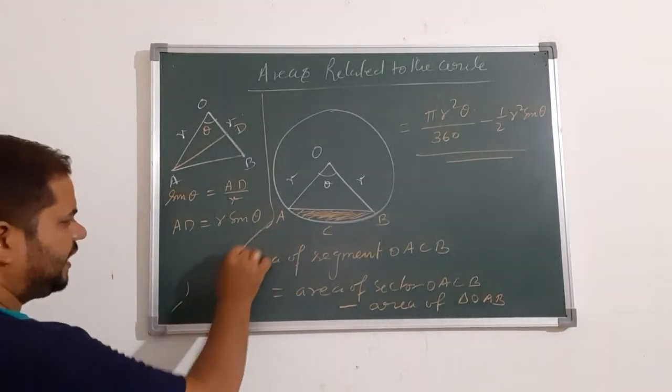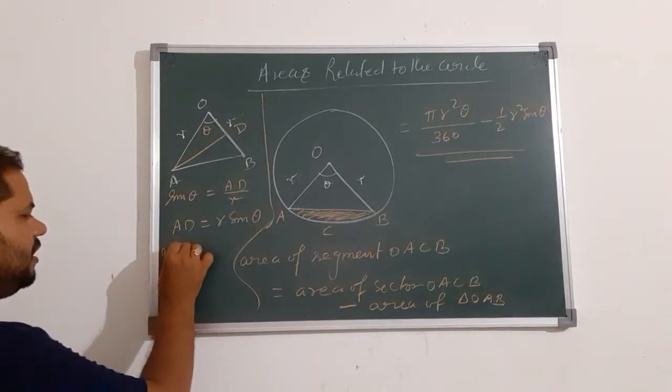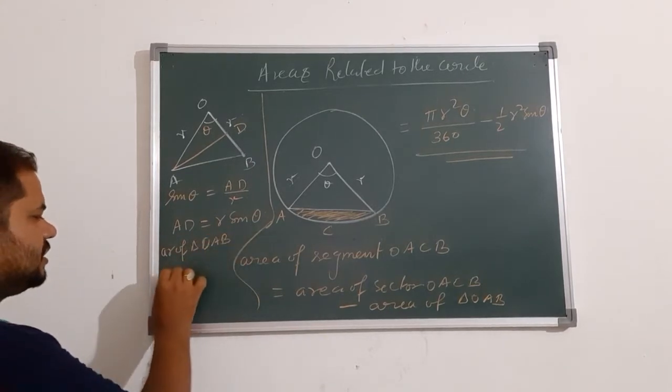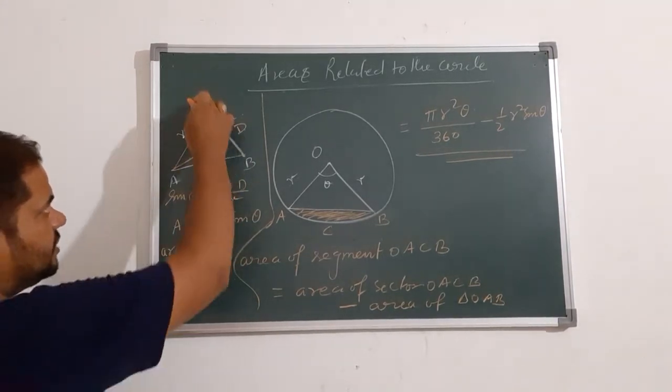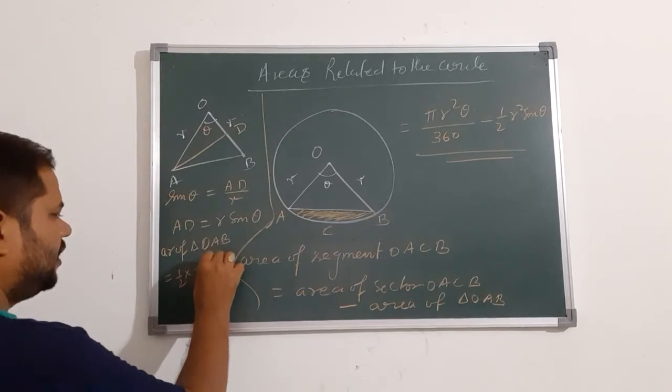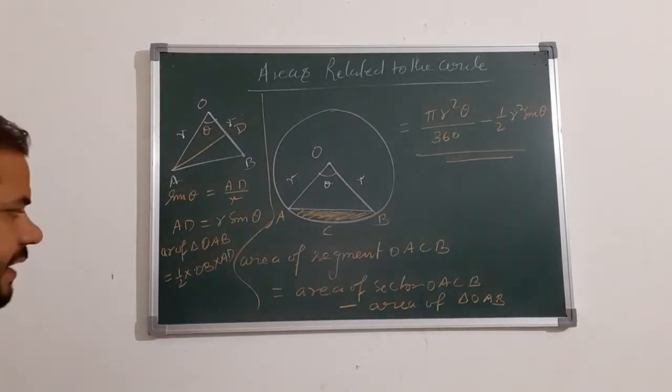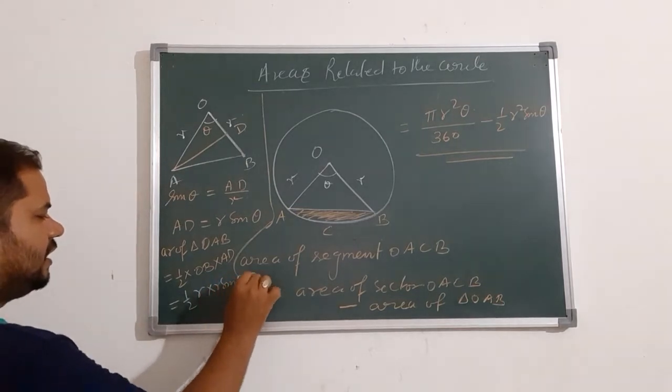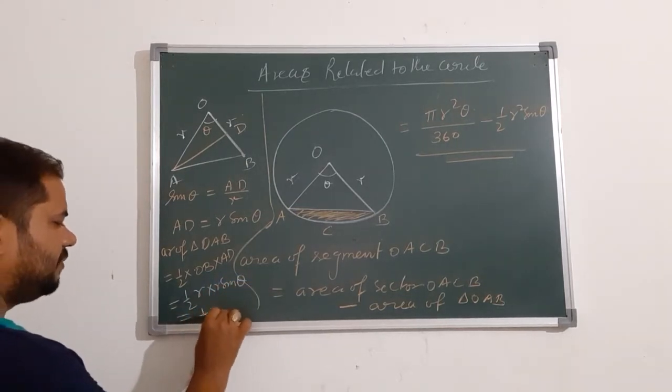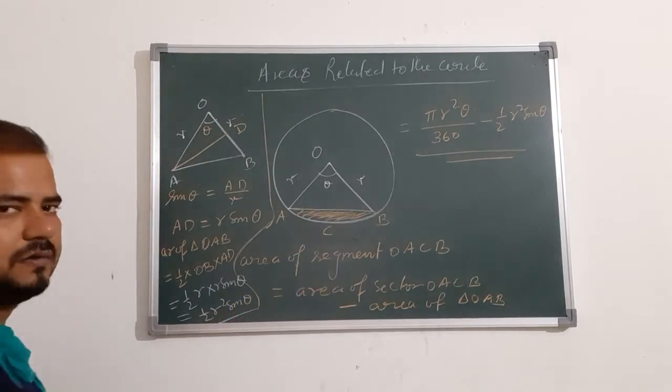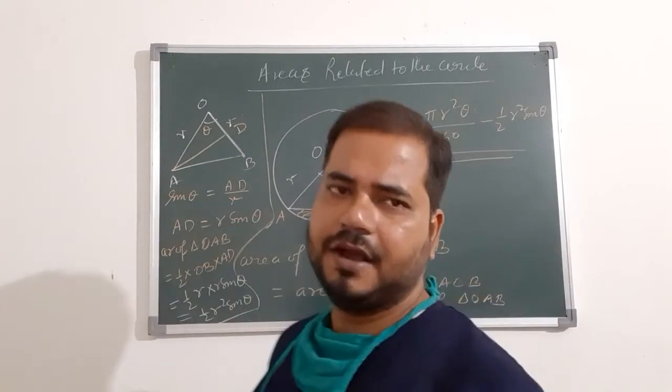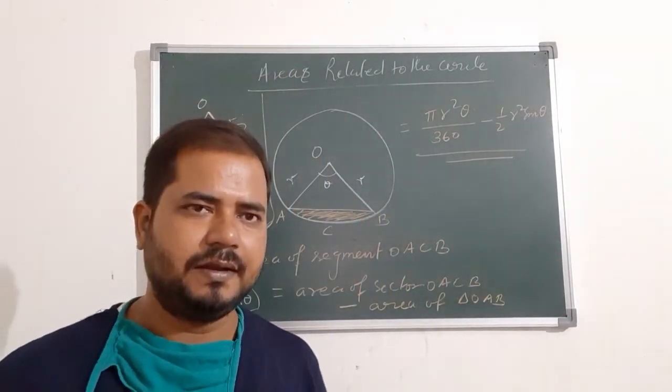What is the area of this triangle? Area of this triangle OAB is ½ into base into AD. I guess AD. So we write here OB as R and AD as R sin θ. So in this manner we have to write the area of this particular segment.